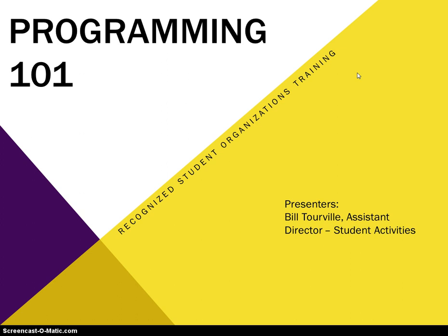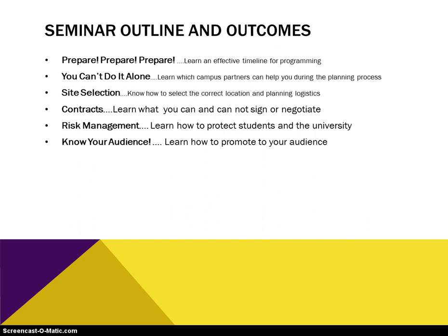A little outline of what we're going to be covering today: how to prepare and how to make sure that you're successful, how to find people to help you out at your events — it's an essential part of your event — what sites are available and what site is correct for what you're trying to do, if you need a contract how to get one and who needs to do the negotiation, a little on risk management and liability insurance, and finally knowing your audience and how to promote your event.